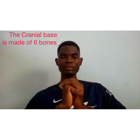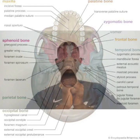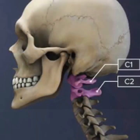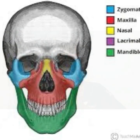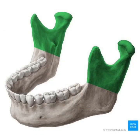Now let's talk about the cranial base. The cranial base is formed by six bones — it includes the frontal bone, the occipital bone, the temporal bone, and the ethmoid bone. They articulate with the first cervical vertebra known as the atlas, and they also articulate with the facial skeleton as well as with the mandible.